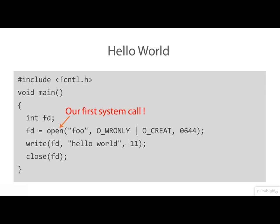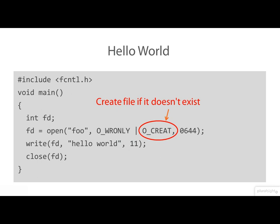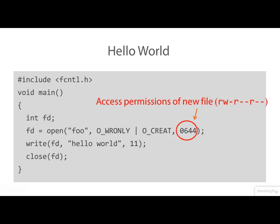The open call, which is our very first system call, takes a file name as argument. Then we see a couple of symbolic constants being used here. This one says that the file is being opened for writing only, and this says that the file should be created if it doesn't exist — that is not a typo, there is no 'e' on the end of create. These constants are powers of 2, intended to be bitwise OR'd together as we do here, which is quite common.